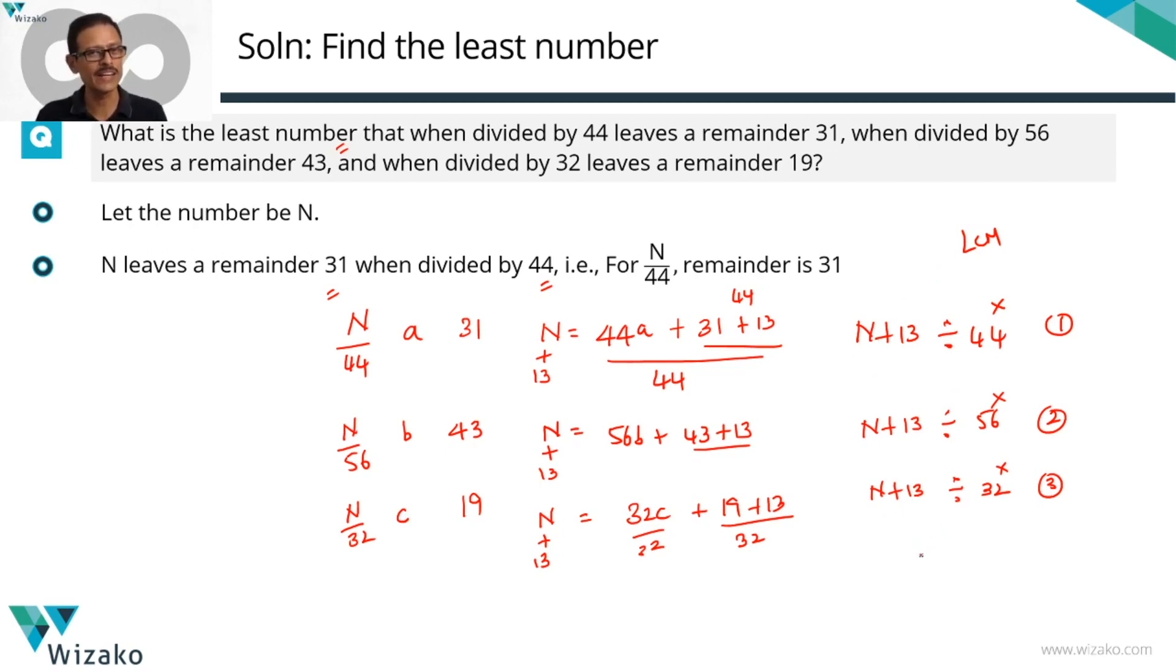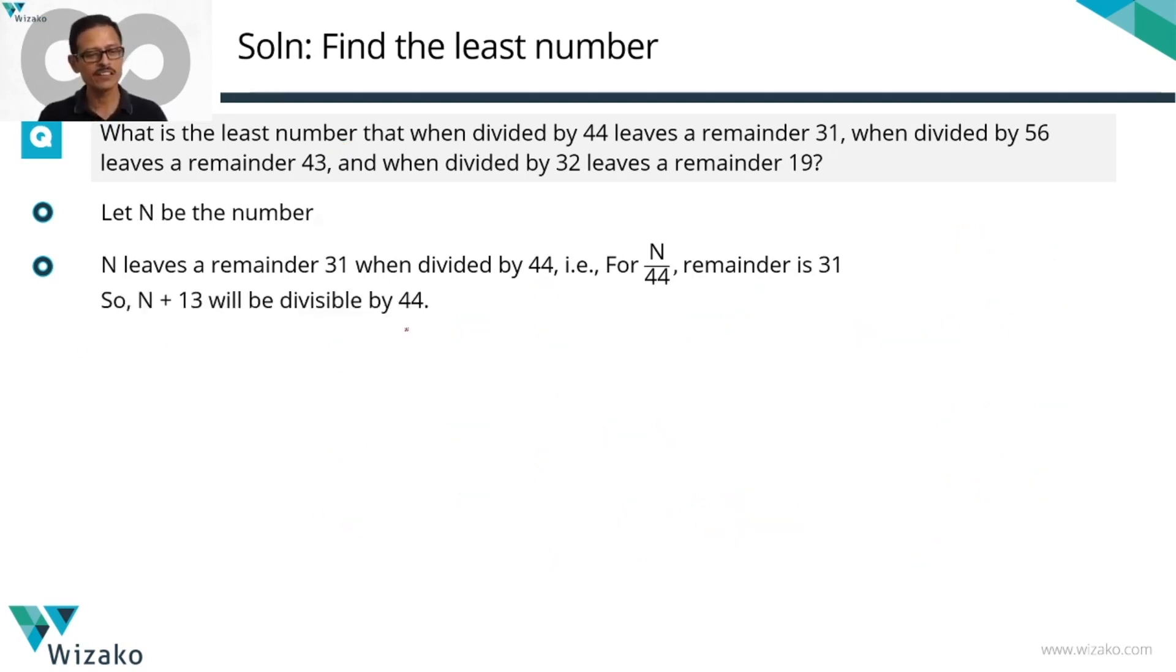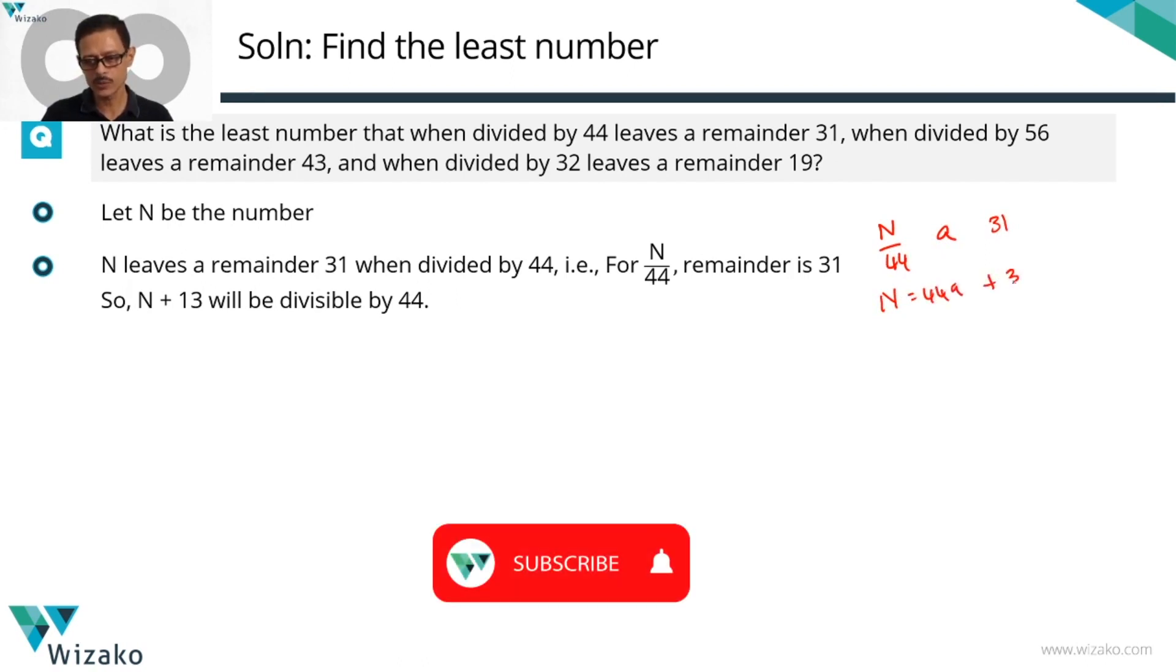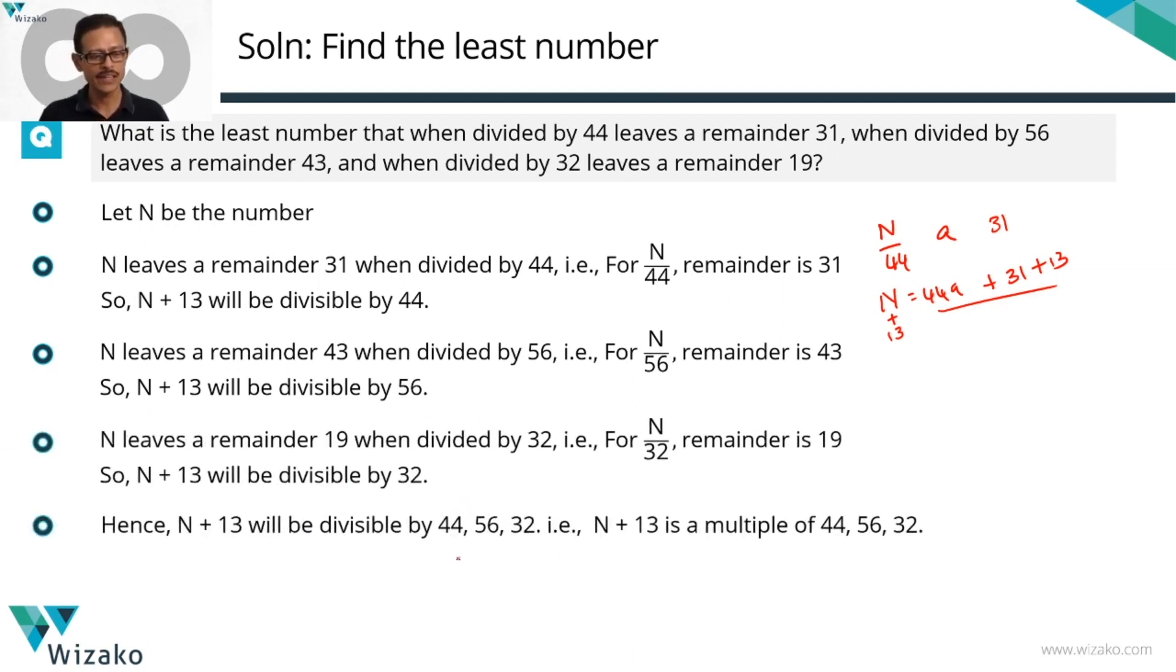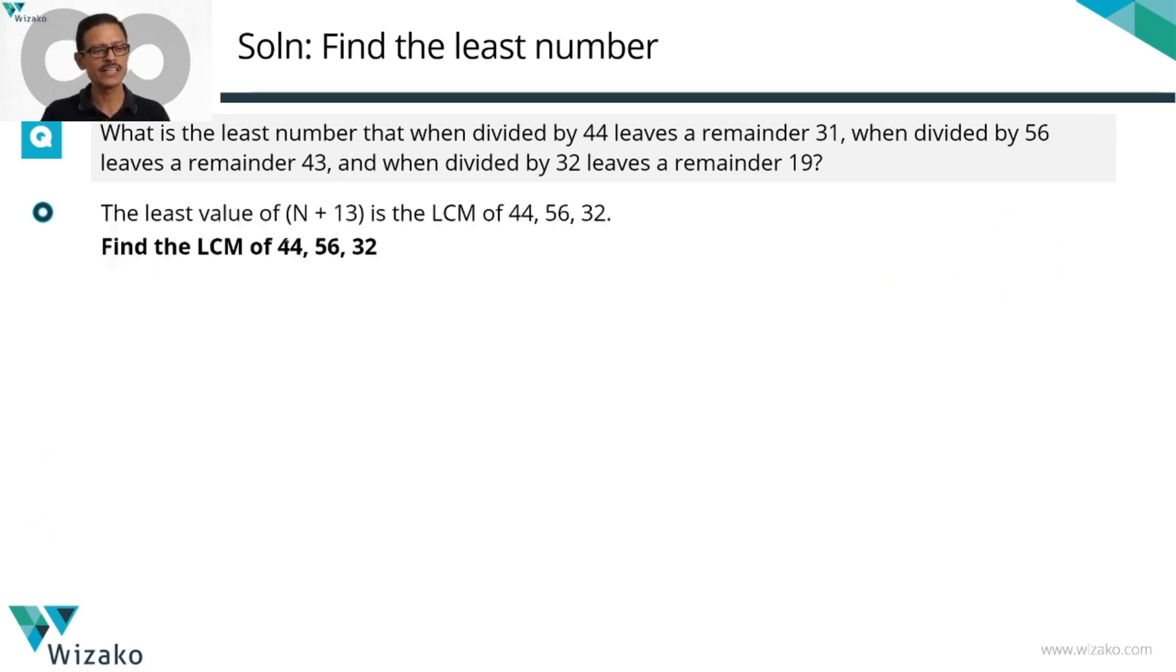Let's quickly summarize till this point. Consolidate it before we go around to finding out the LCM. The first inference is that N plus 13 will be divisible by 44. You realized it because N by 44 gives you a quotient A and a remainder of 31. So N is equal to 44A plus 31. Adding 13 to both sides. So left hand side is N plus 13. Right hand side is a number that's divisible by 44. Quickly running through the remaining two, N plus 13 is divisible by 56, is also divisible by 32. So N plus 13 is divisible by 44, 56, 32 which means it's a multiple of 44, 56, 32. The smallest such number is the LCM of all these three numbers.